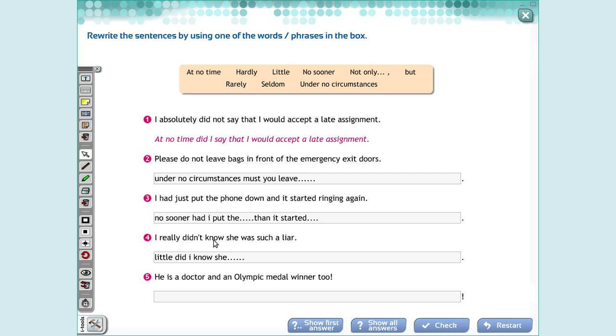He is a doctor and an Olympic medal winner too. Ele não é apenas médico, mas um ganhador de medalha olímpica. So, how can I say? Not only. Invert. Is he a doctor? But also. But an Olympic medal winner.